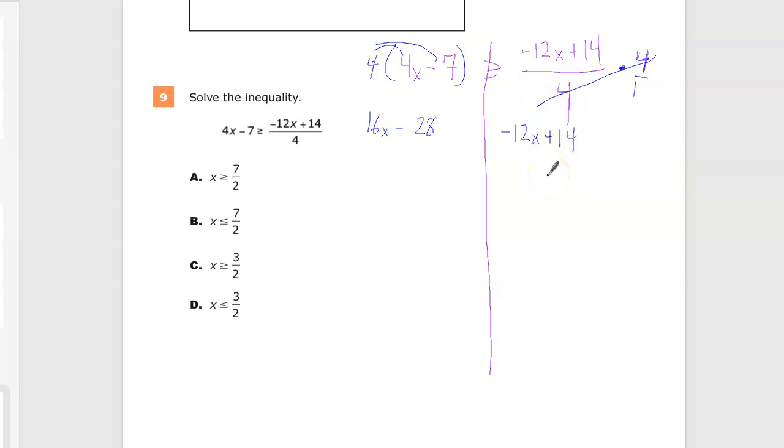So now I'm ready to combine like terms because I can't do anything on this side. 12x and 14 aren't like terms. 28 and 16x are not like terms either.